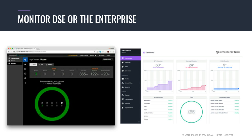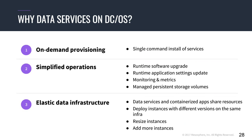So why would you want to run any data services on DCOS more generally — things like Apache Kafka or Apache Spark? The first benefit is on-demand provisioning. With DCOS, you can install these services with just a few clicks from a catalog of over 100 different services. This saves time on deploying new data services, allows you to avoid finding specialized talent, and lets developers experiment with new data services.